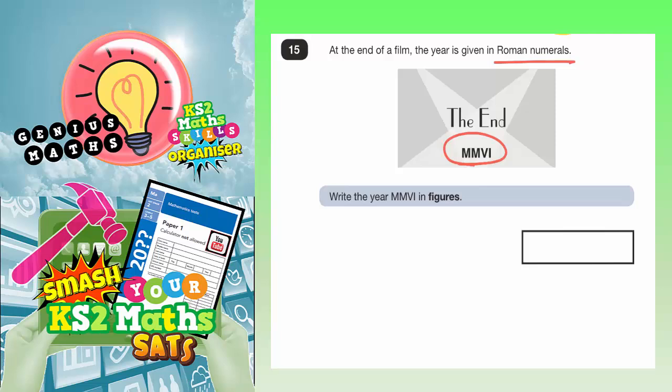Well, we've got to remember, for Roman numerals, there are seven symbols that we need to know about. I in Roman numerals is 1, V is 5, X is 10, L is 50, C is 100, D is 500, and M is 1,000.